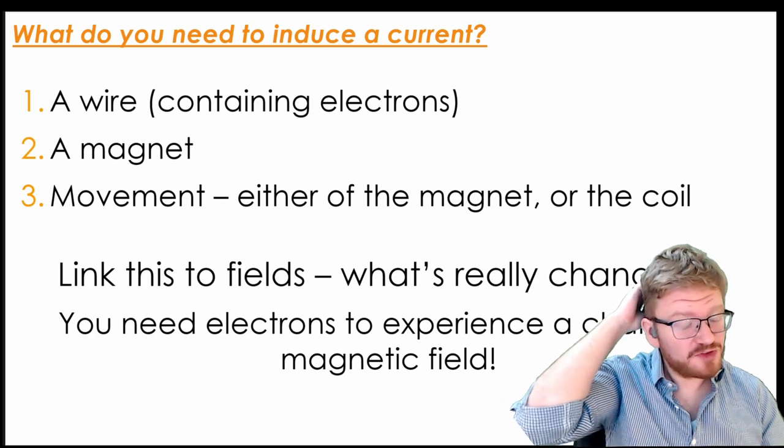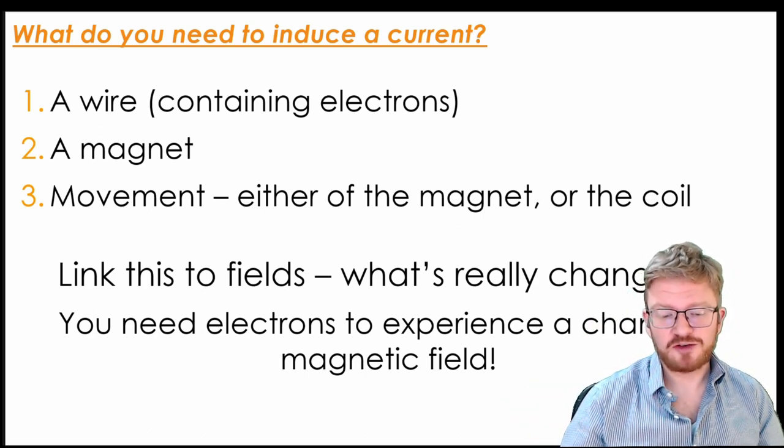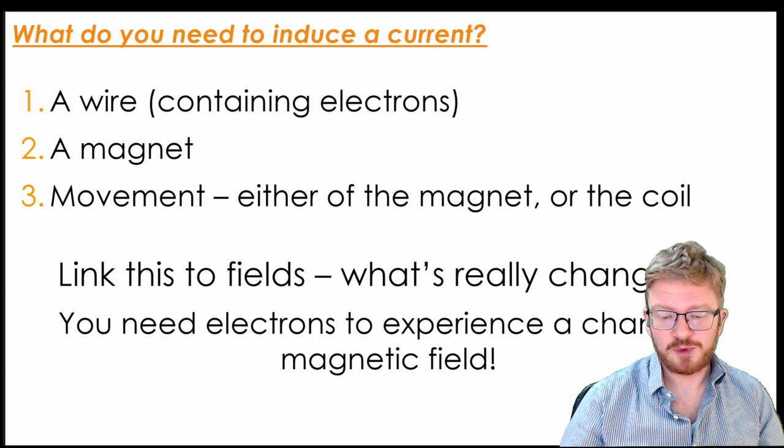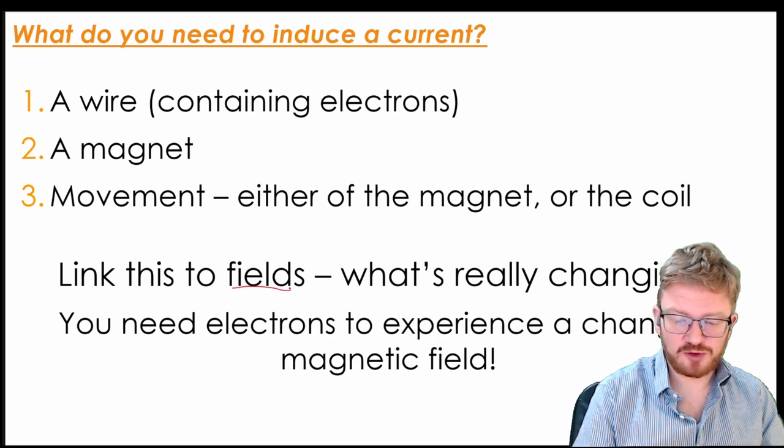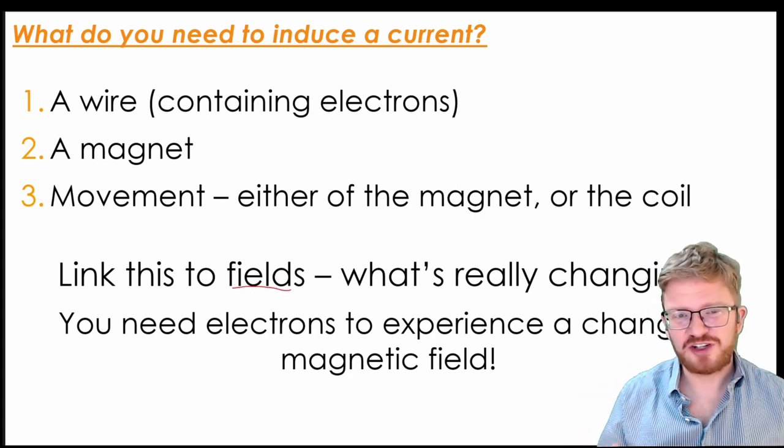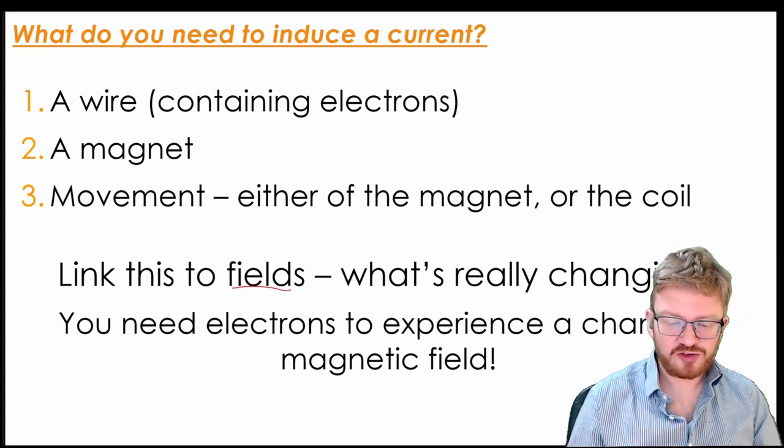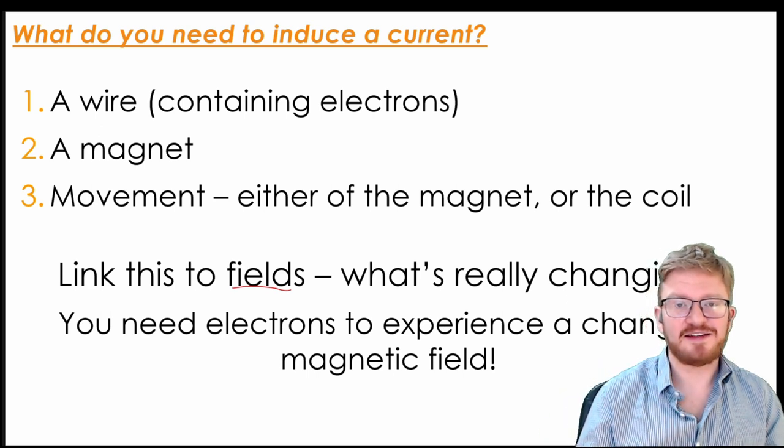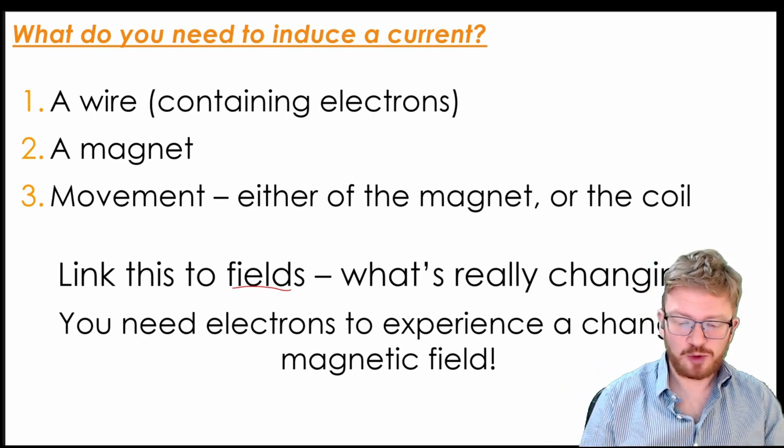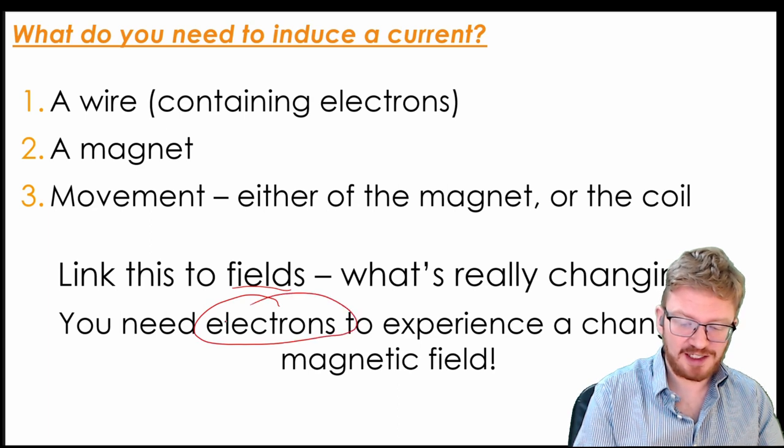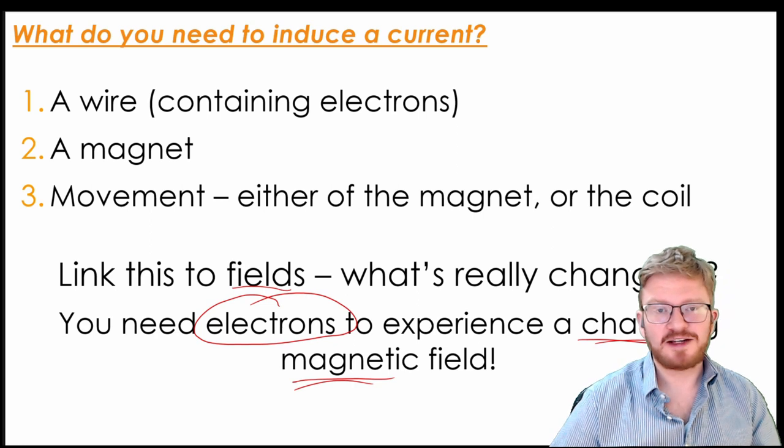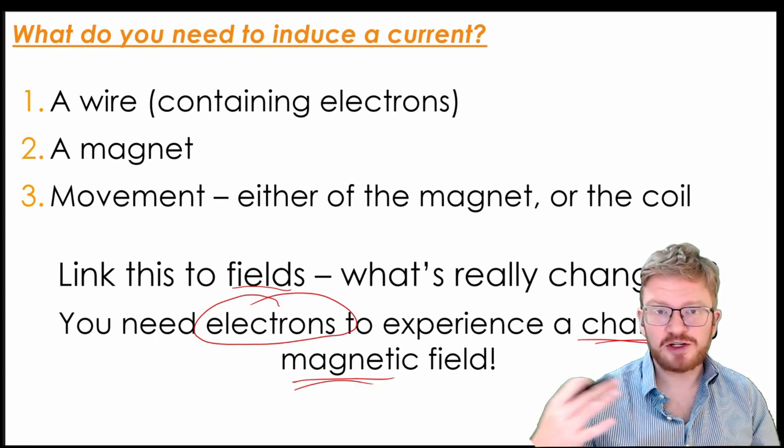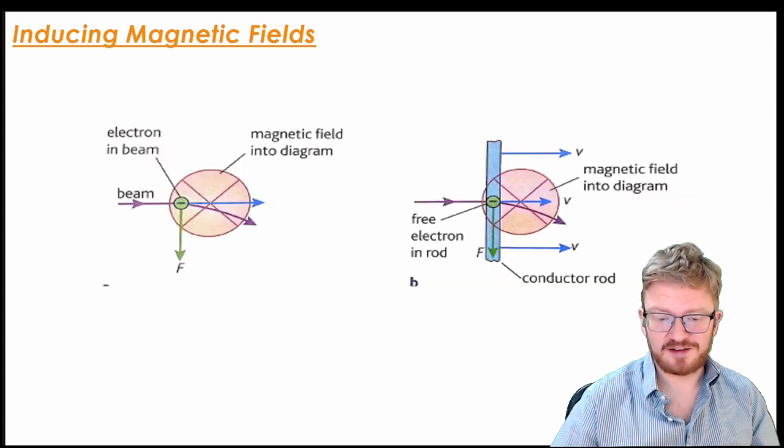So as we've said, what we need in order to induce a current are a wire, which has electrons in it, we need a magnet, and we need movement. So if we think about this in terms of fields, we can say, well, what's actually changing? What's changing is that magnetic field. So what we can say is that we need electrons to experience a changing magnetic field. And what we're going to now do is prove why that is.